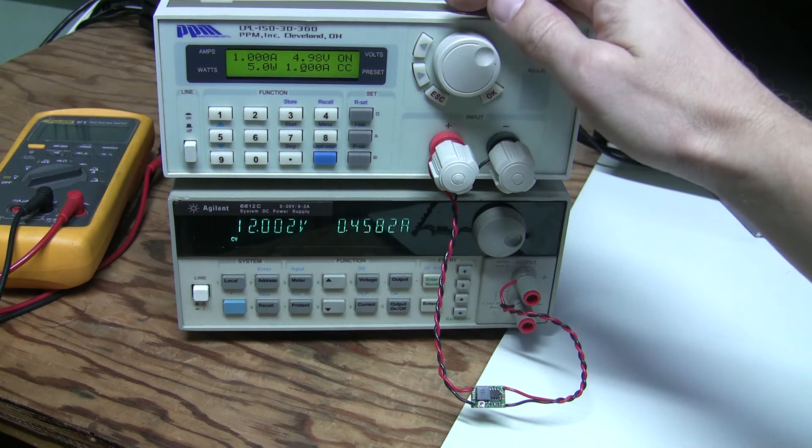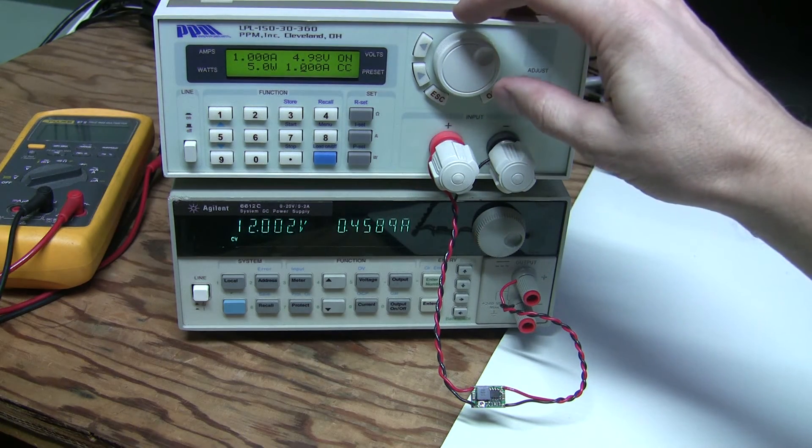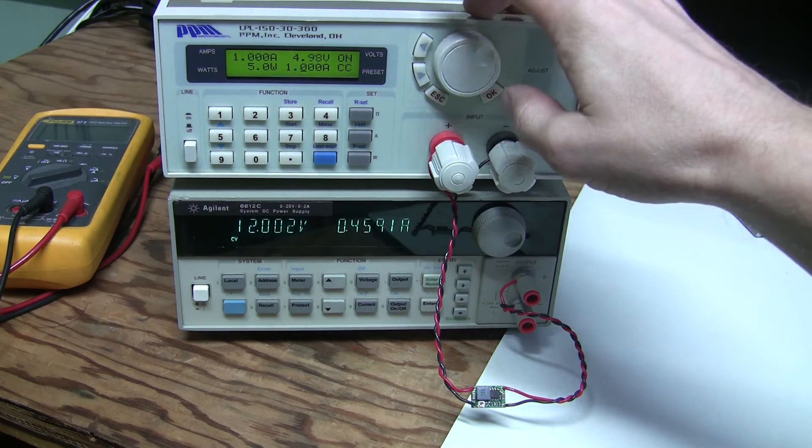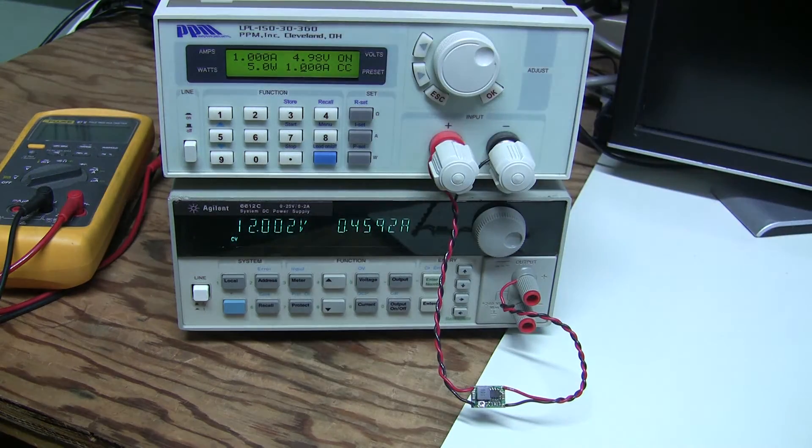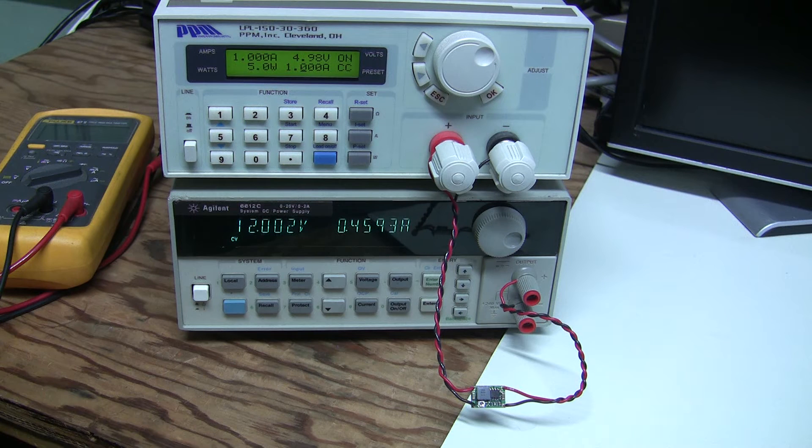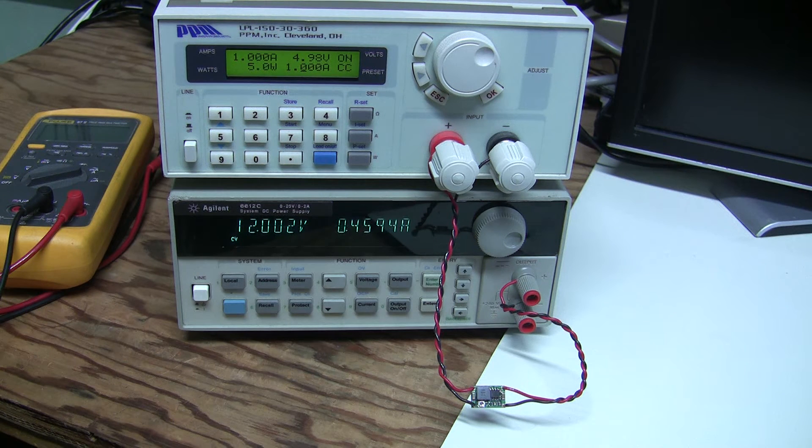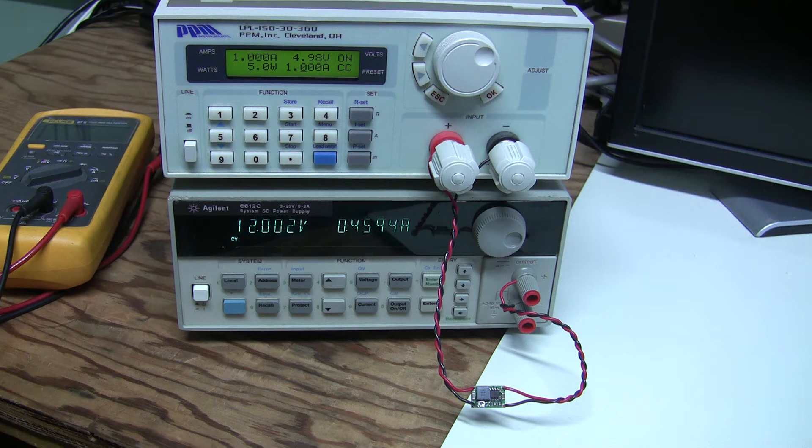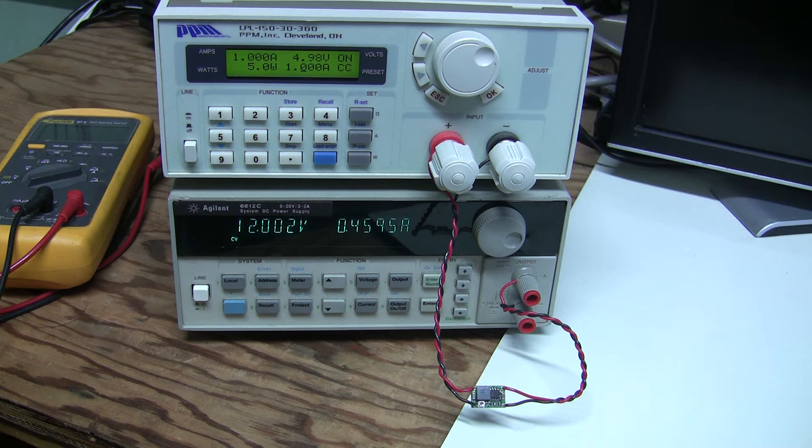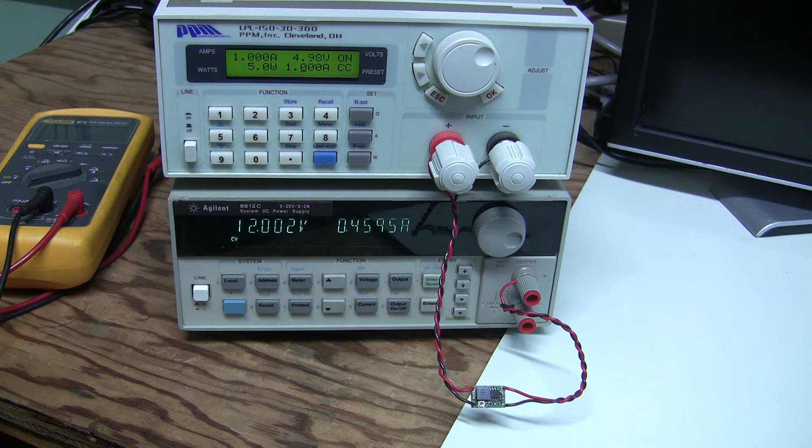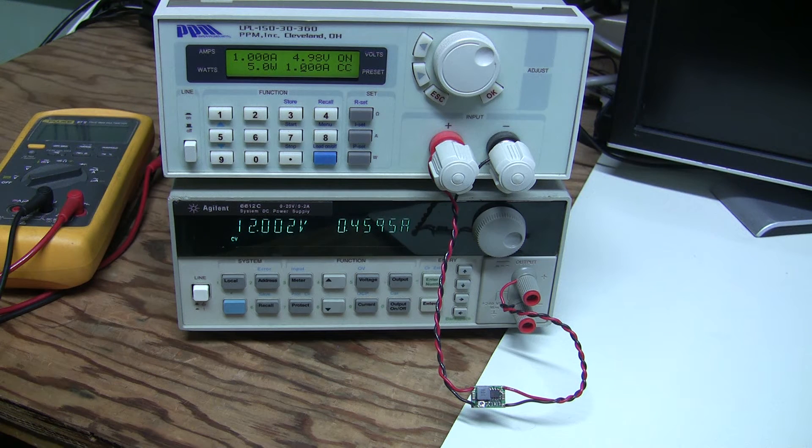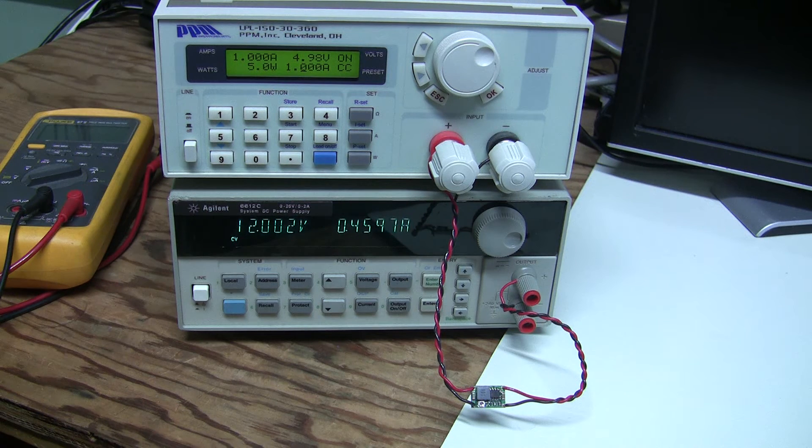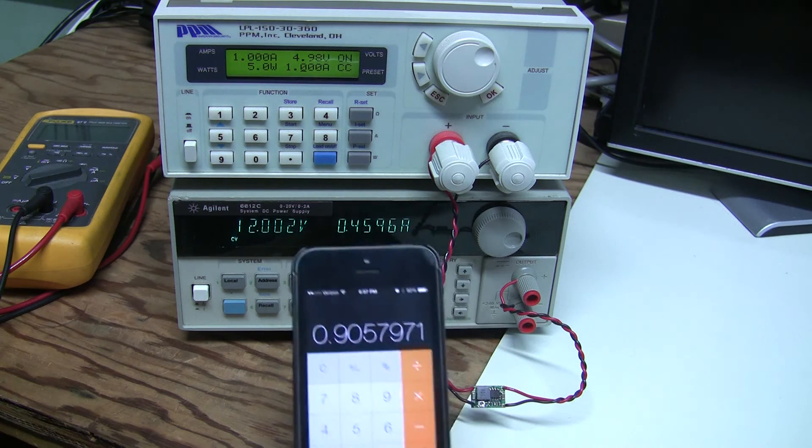To 1 amp, no problems at all. Let's see what the efficiency is at this level. 5.5 watts out, and the input is 12 times 0.46, which is 5.52 watts. 5 divided by 5.52 is again 90 percent.